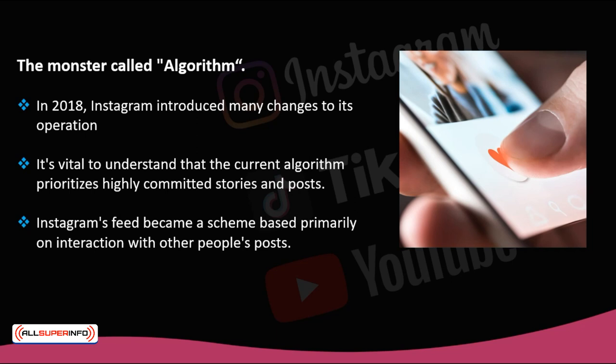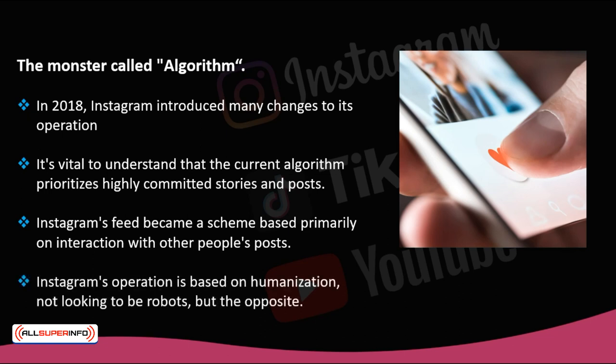When a post gets a lot of likes and comments, the algorithm reads it as a high-quality post with engaging content, and it's likely that more people will be interested in seeing it. Instagram's representatives commented: 'The content priority in your feed will depend on whether the algorithm determines the content is interesting for you, and on the quality and quantity of interactions with the person who is posting.' In other words, Instagram's operation is based on humanization — not looking to be robots, but the opposite. Instagram seeks to get closer to you by providing tools to connect with and get to know your followers.